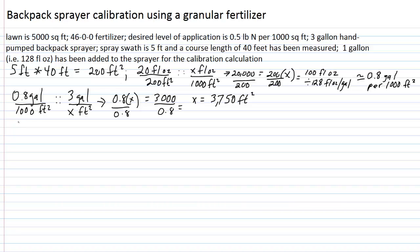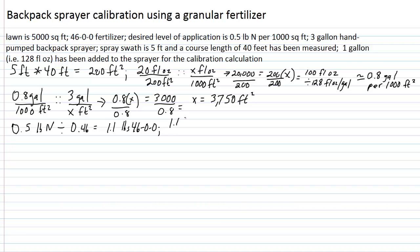Now we calculate how much fertilizer goes into the spray tank. Our desired level is half a pound of nitrogen per thousand square feet. We must first convert pounds of nutrient to pounds of fertilizer, since our source is 46% nitrogen by weight. We take 0.5 pounds of nitrogen divided by 0.46 — the nitrogen analysis as a decimal — and that equals 1.1 pounds of 46-0-0 required to deliver half a pound of nitrogen per thousand square feet.